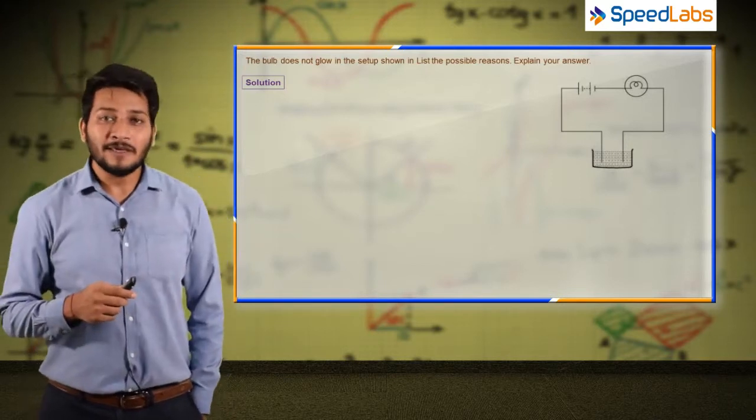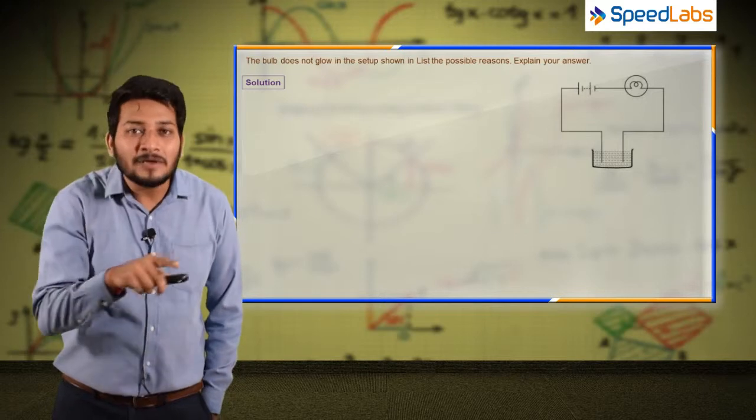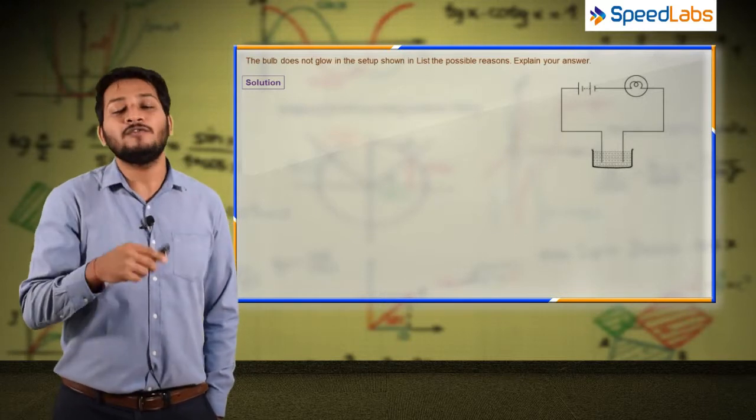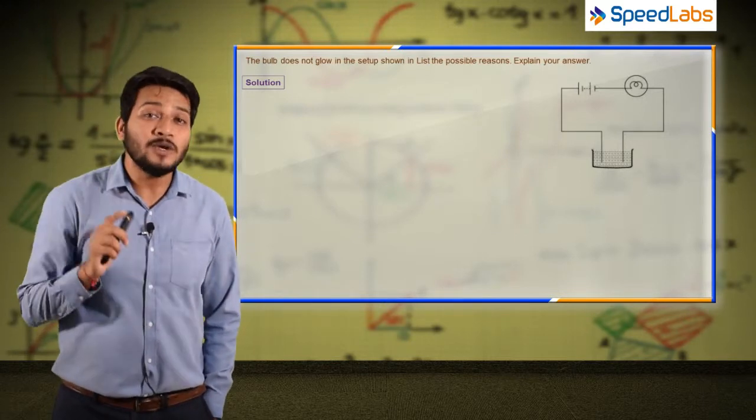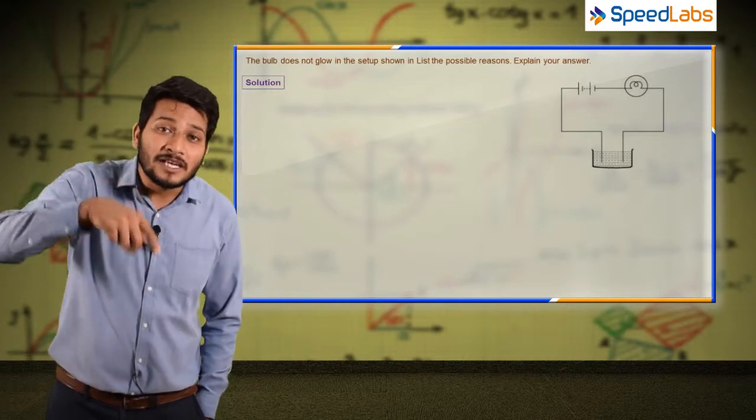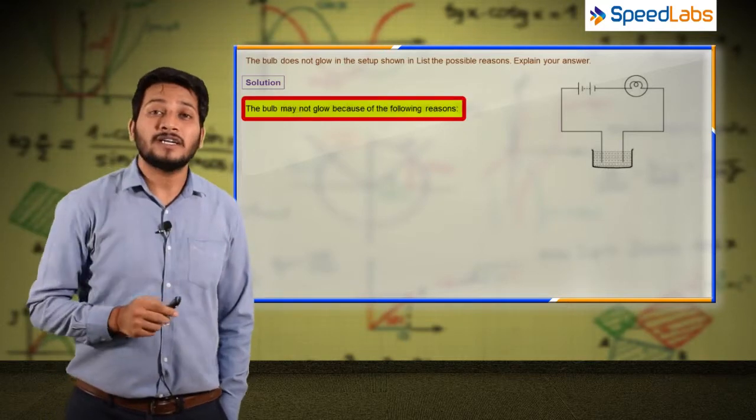The first reason could be that electricity is not flowing in the circuit, current is not flowing. And when will current not flow? When the solution is non-conducting.